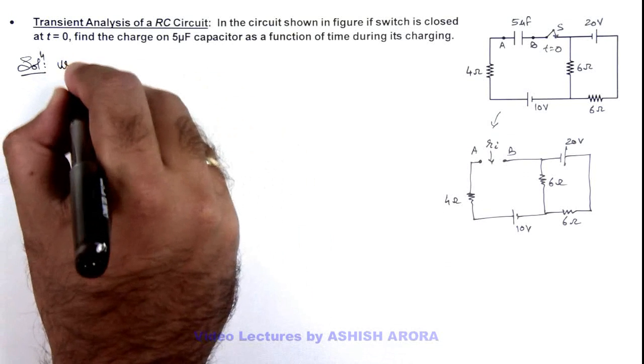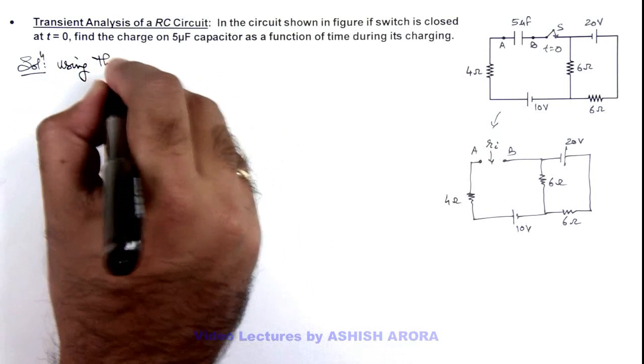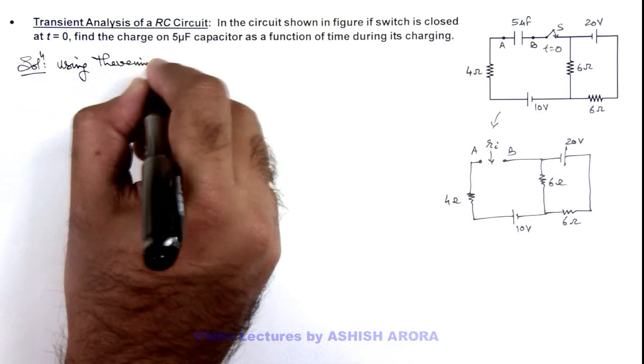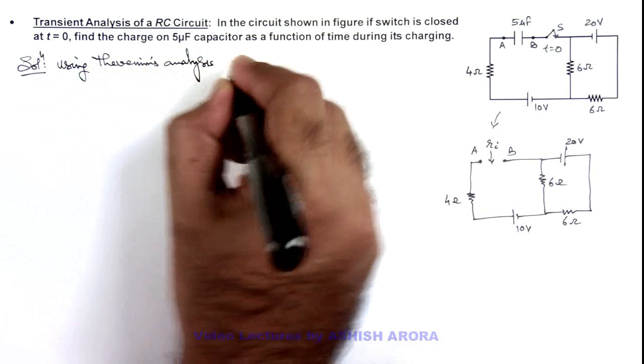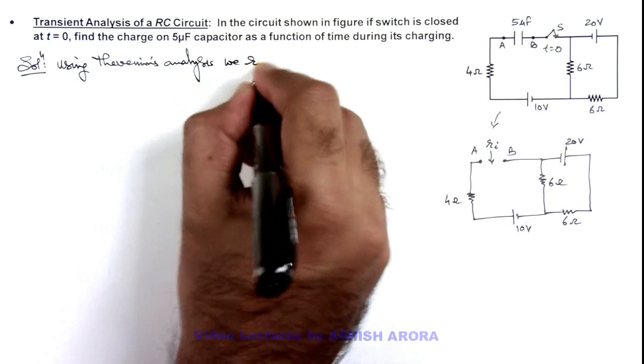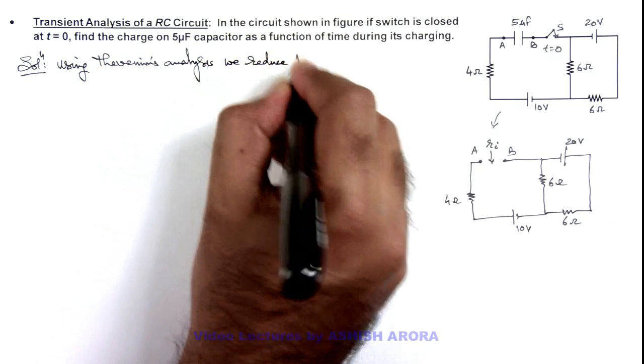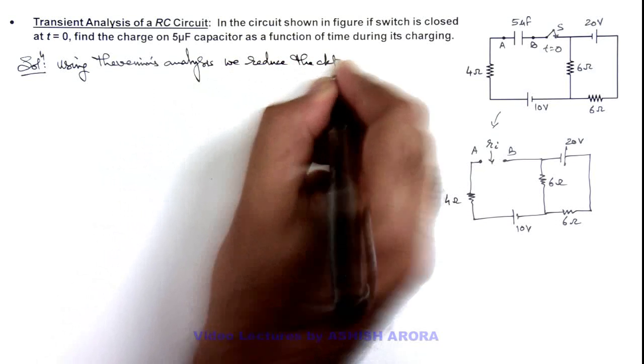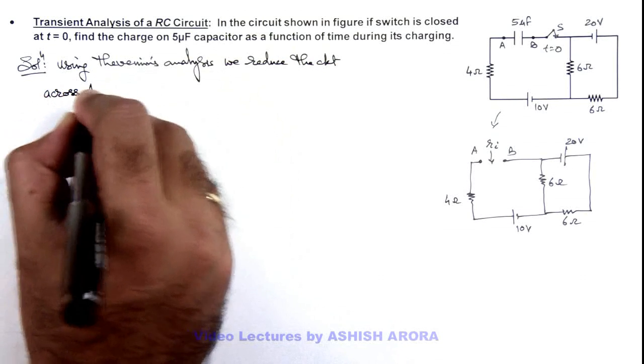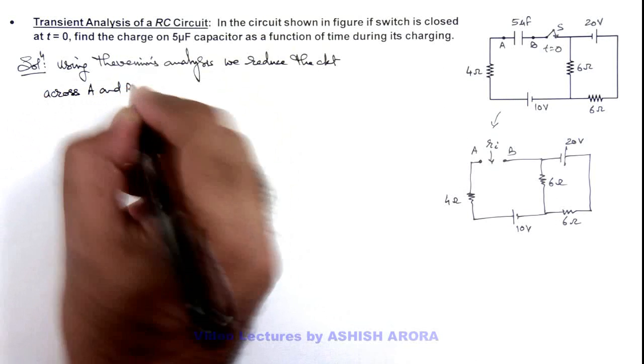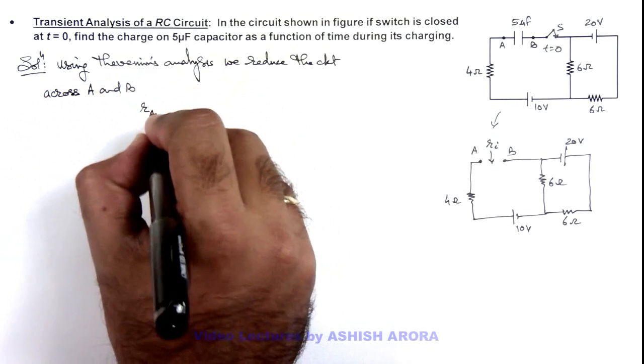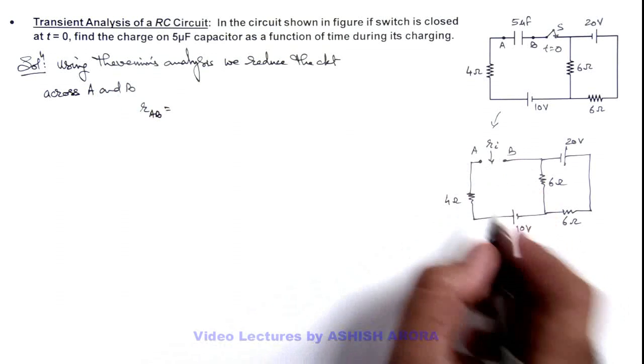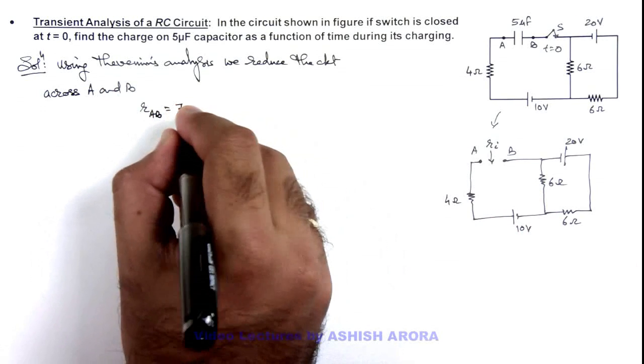So here, using Thevenin's analysis, we reduce the circuit across A and B. The internal resistance across A and B can be taken as 4 in series with 3 ohm, this is 7 ohm.